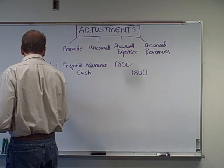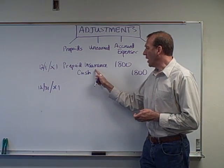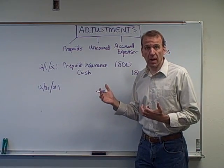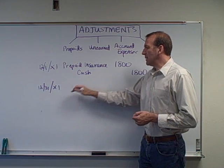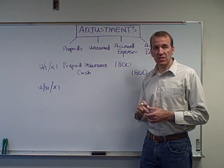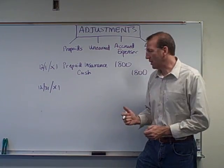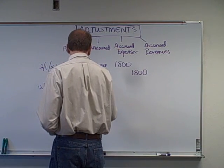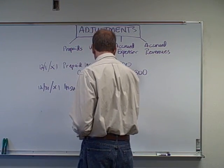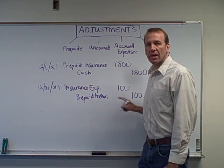Now, at year end, 12-31 Year 1, we've used up part of this insurance policy. On our books we have as an asset Prepaid Insurance for $1,800, and that policy is good for 18 months, or $100 per month — you take $1,800 divided by 18 months. By December 31st we've used up one month, so it should be on our books at $1,700. We need to expense part of this, so we debit Insurance Expense $100 and credit Prepaid Insurance $100. That debit less the credit gives us the $1,700 balance we need.